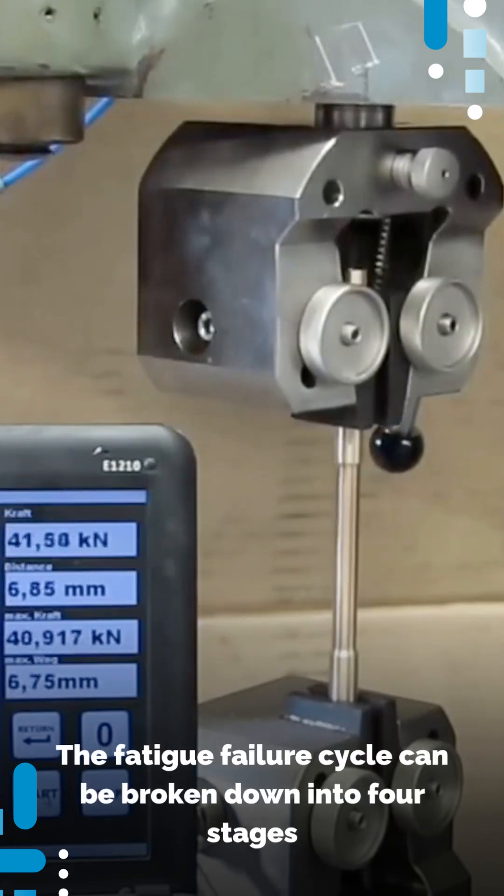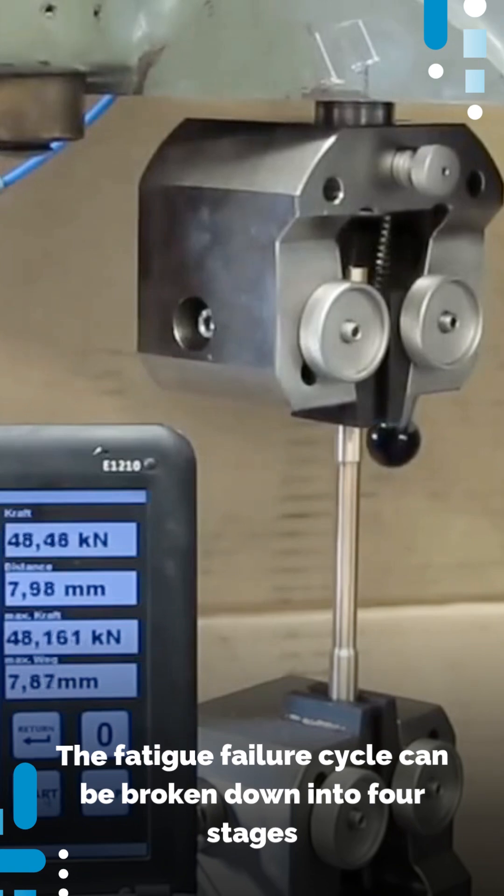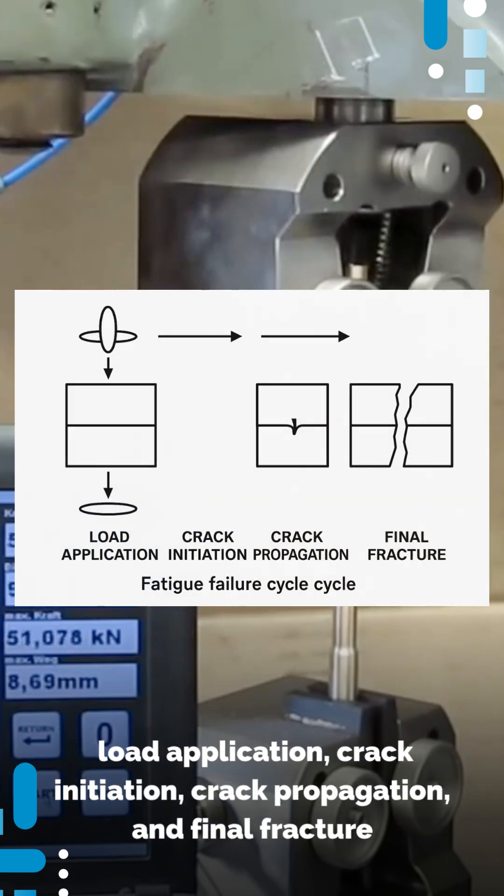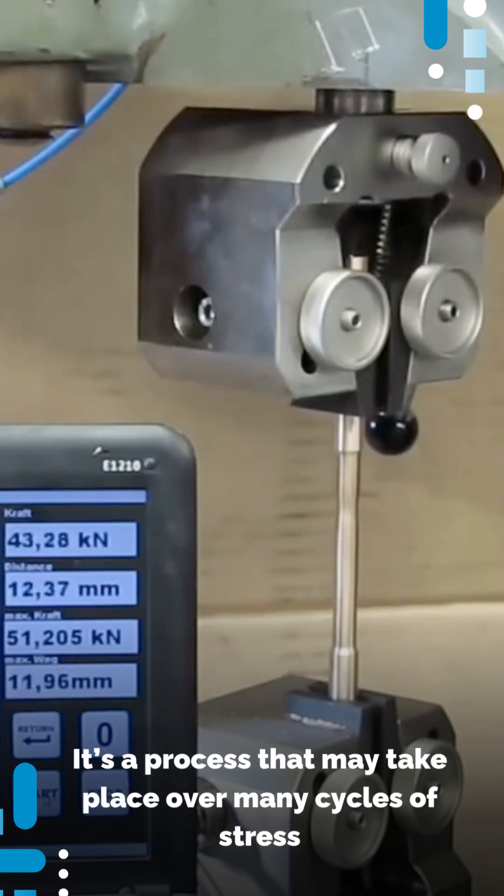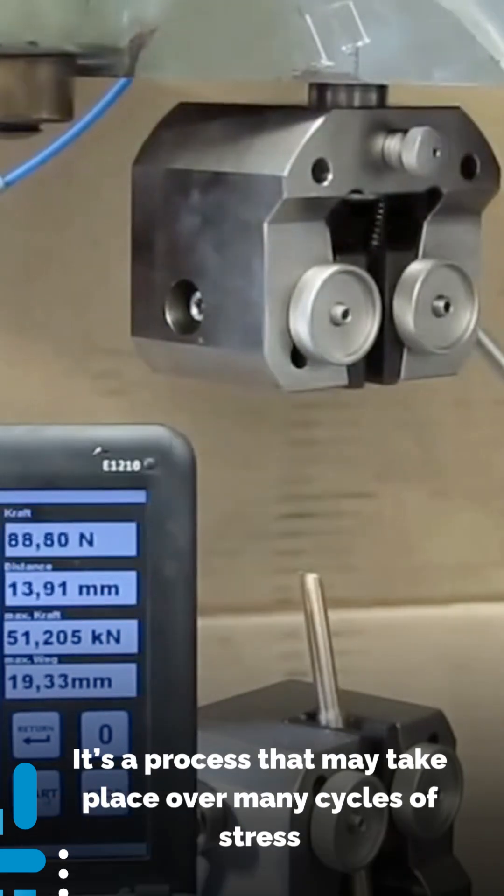The fatigue-failure cycle can be broken down into four stages: load application, crack initiation, crack propagation, and final fracture. It's a process that may take place over many cycles of stress.